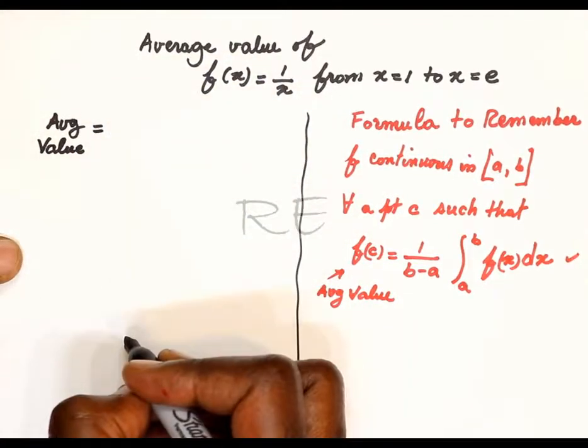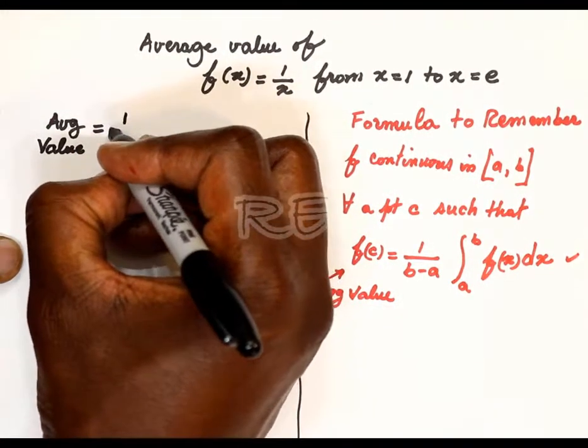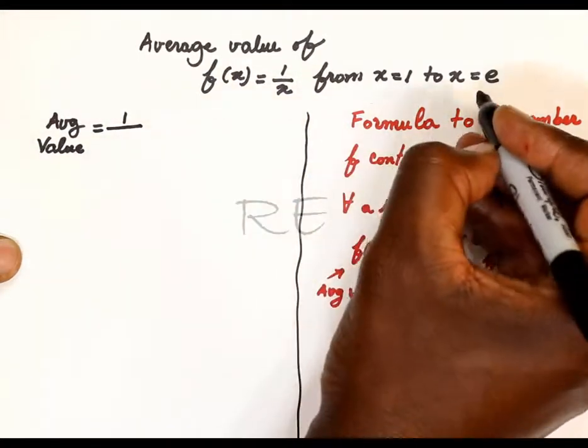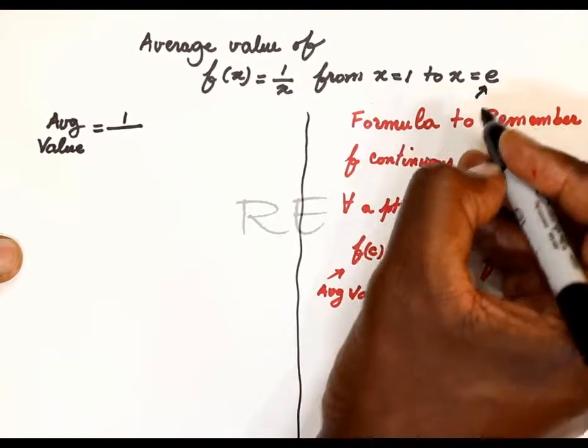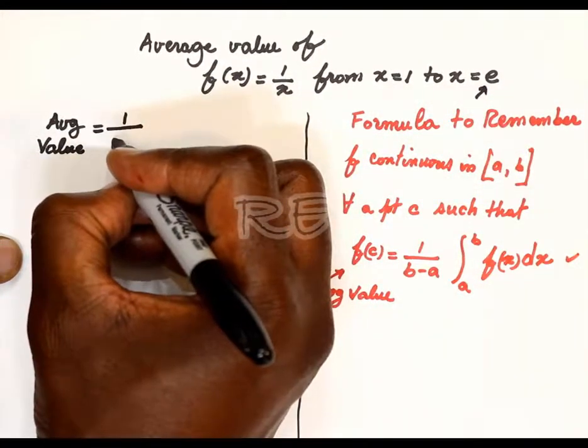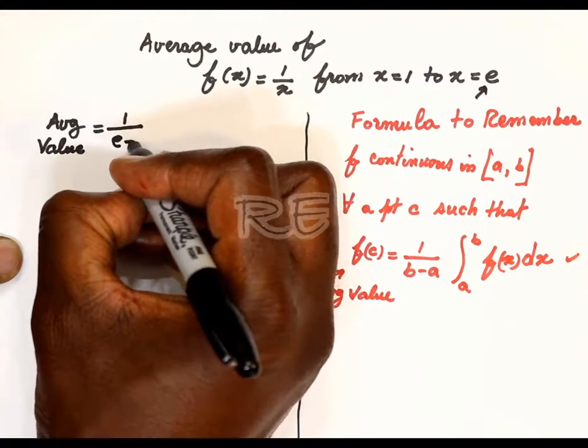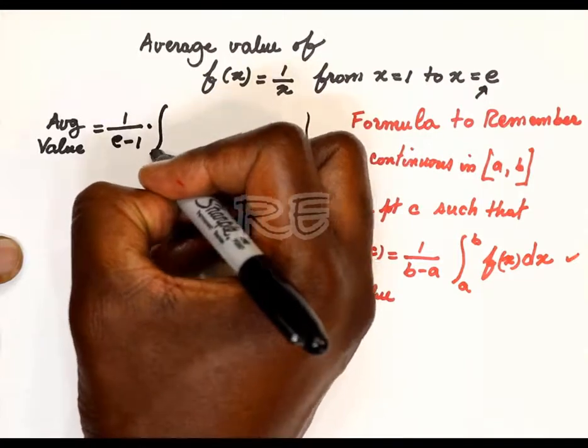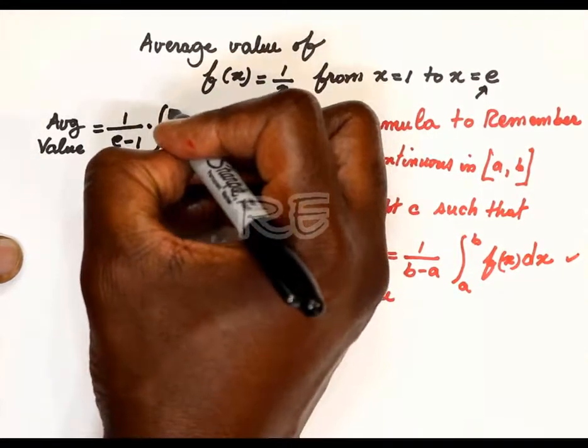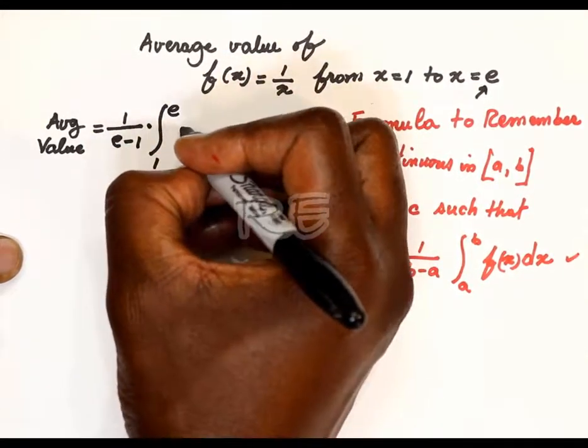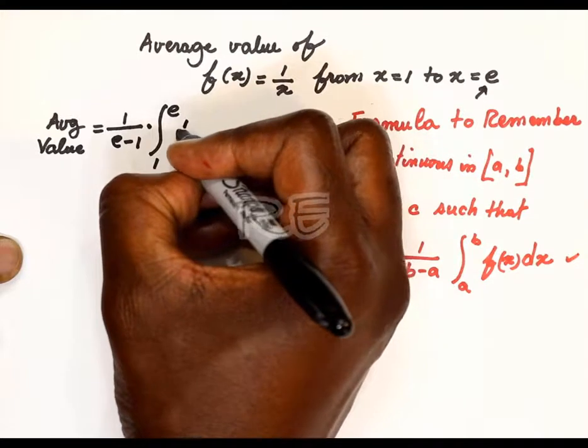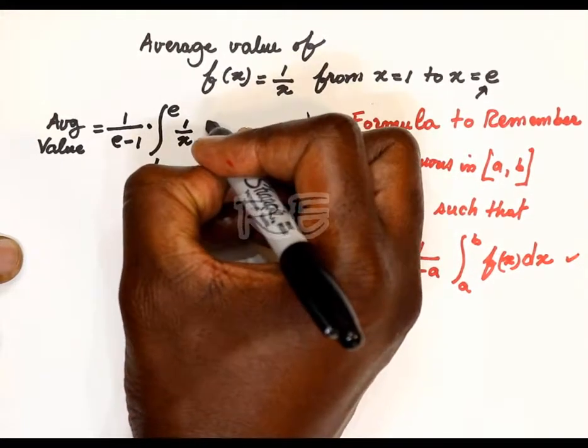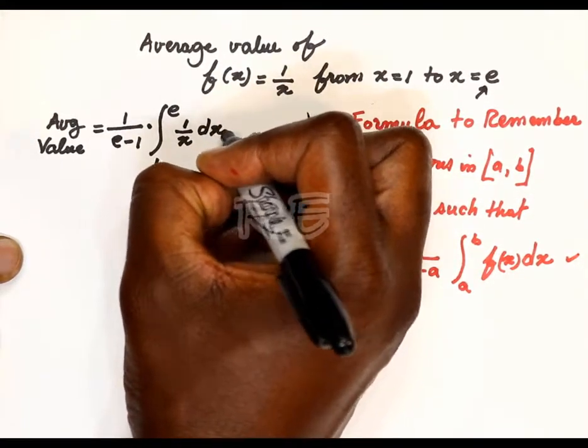Now, concerning our function, the average value will be 1 over e minus 1 multiplied by the integral from 1 to e of 1 over x.